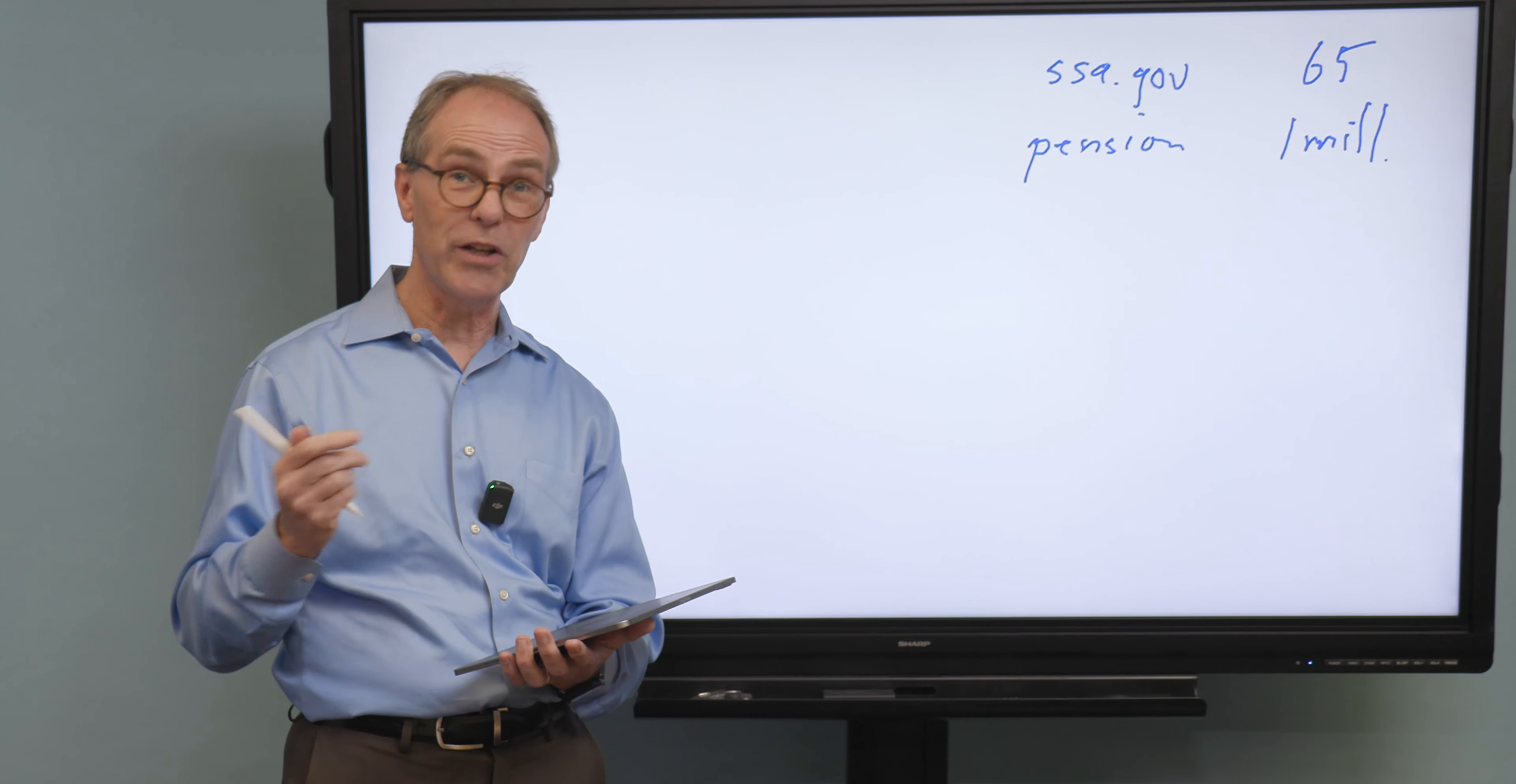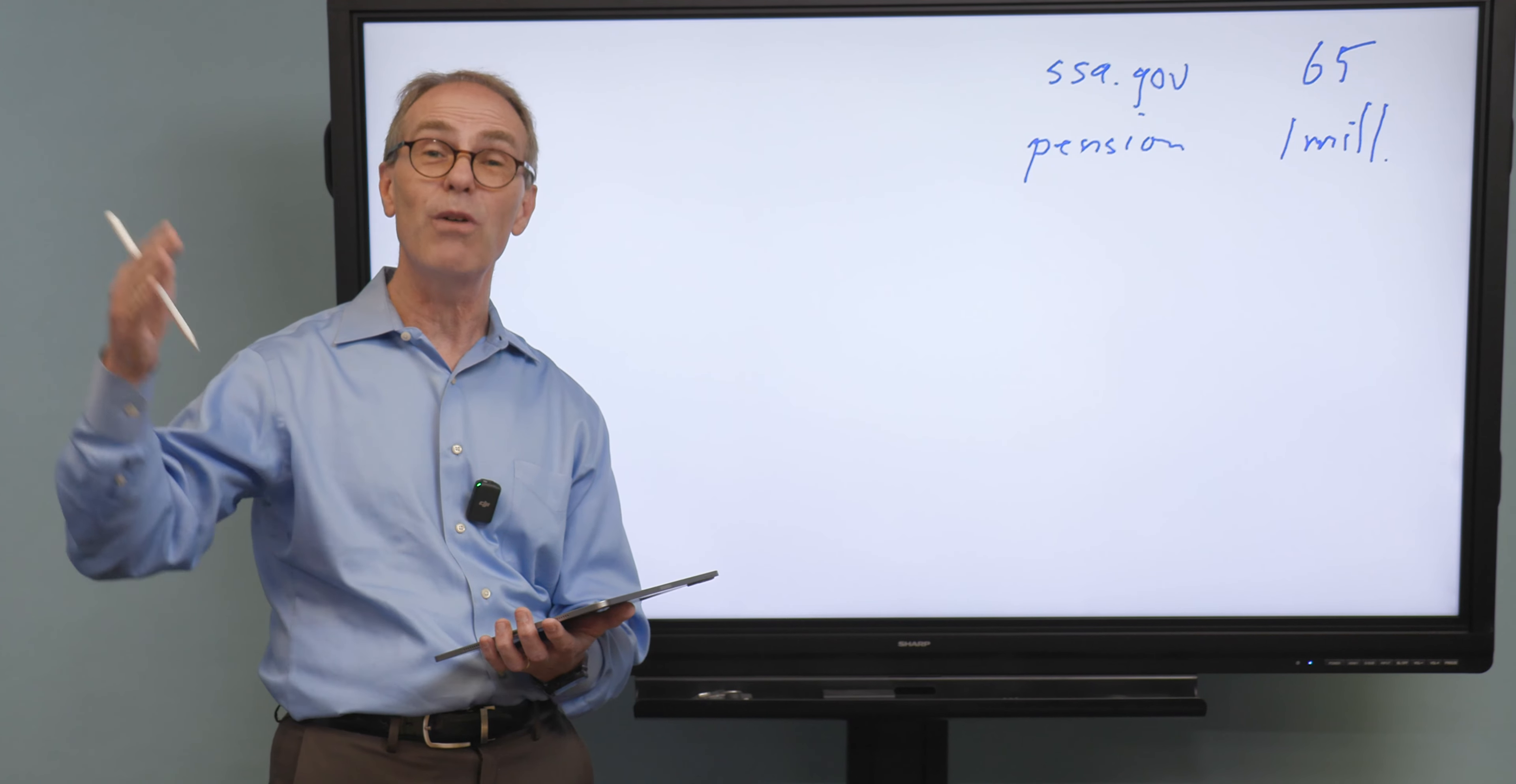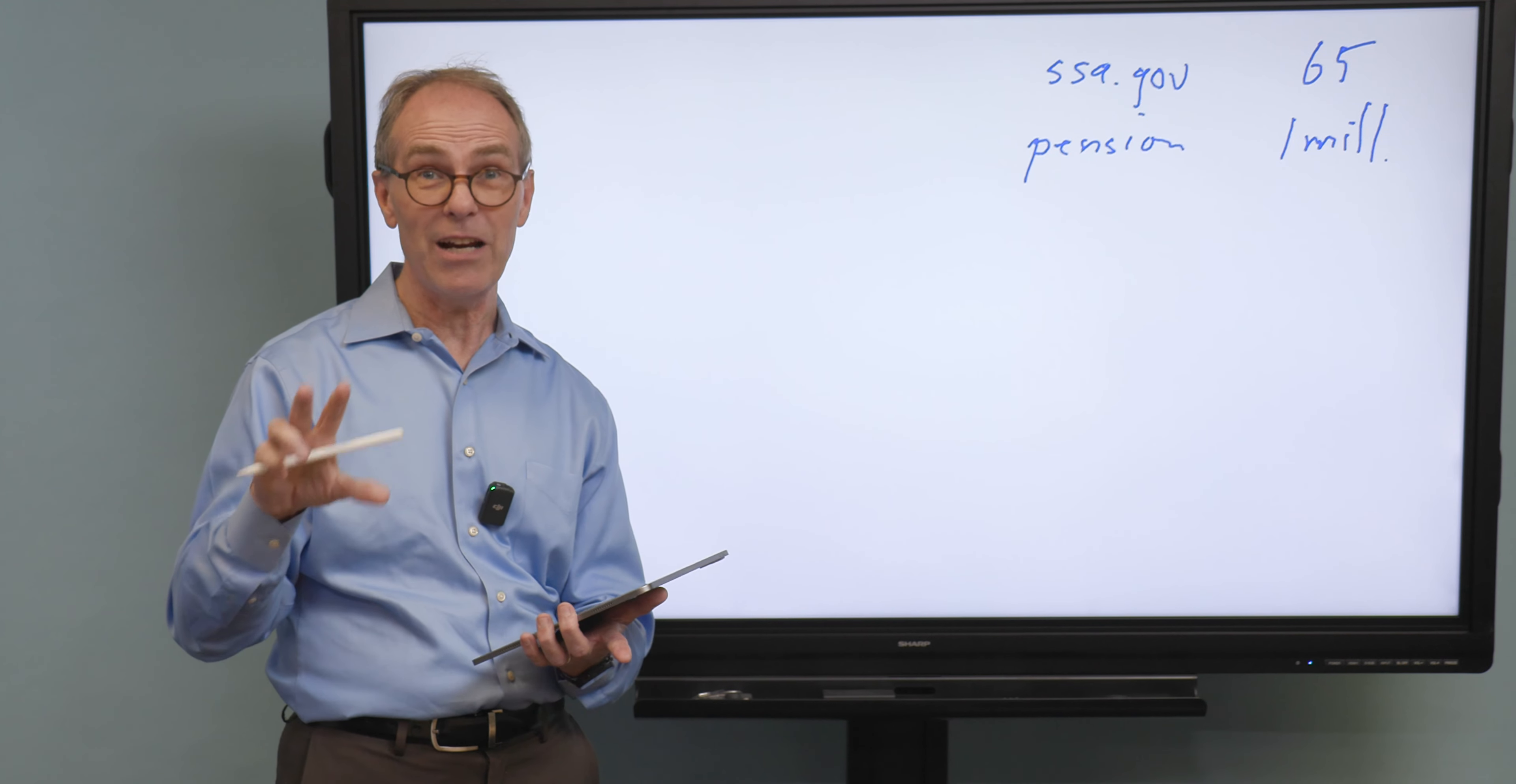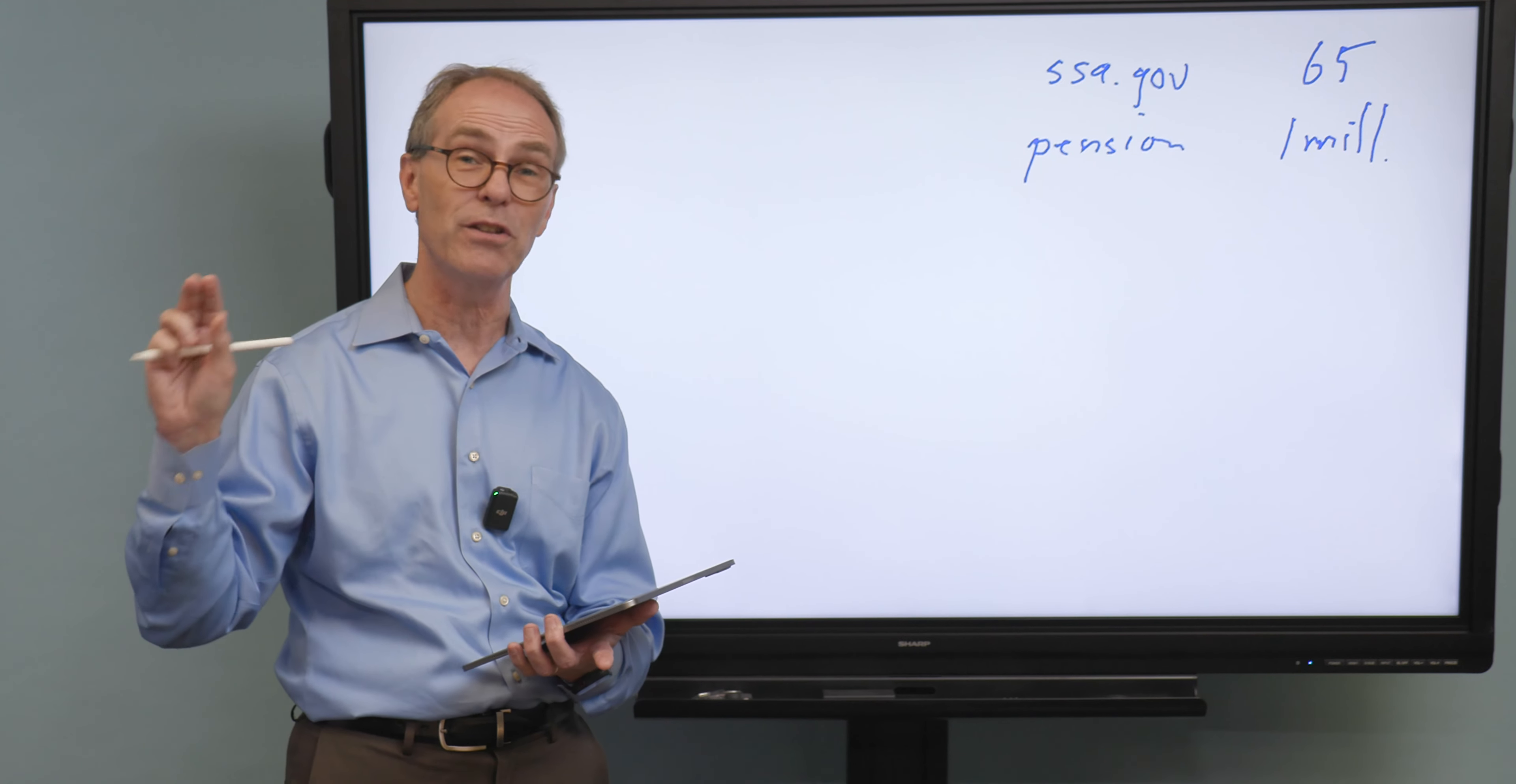Now, another thing we want to look at is this. Does your pension have a COLA, a cost of living allowance? Does it have a way to go up with inflation? The fewer the benefits in that area, if you don't have any kind of a COLA, the more money you're going to need elsewhere to make up for the lack of inflation protection.